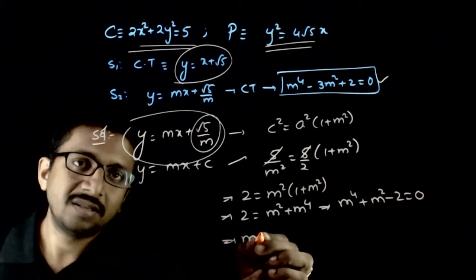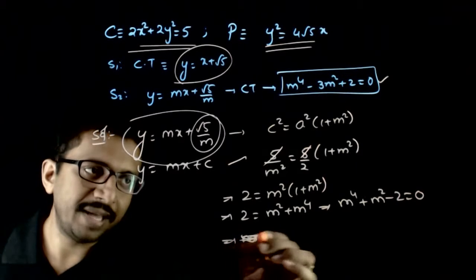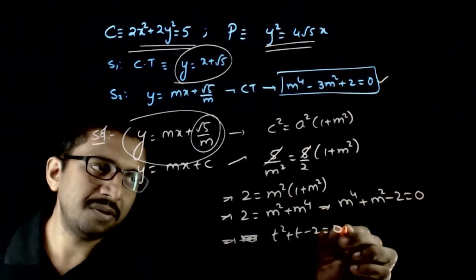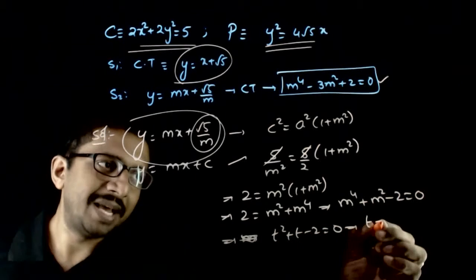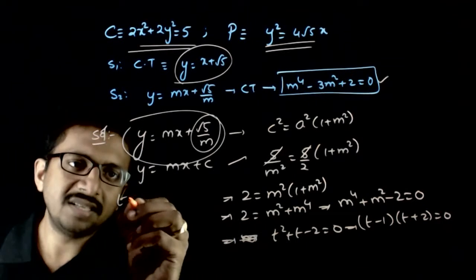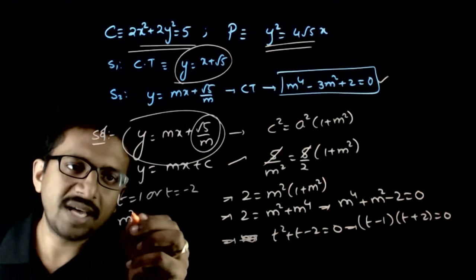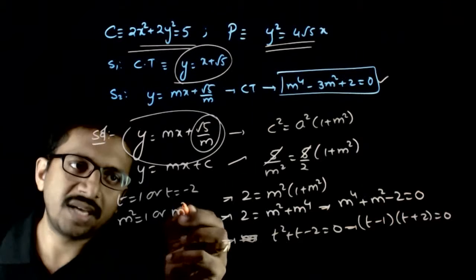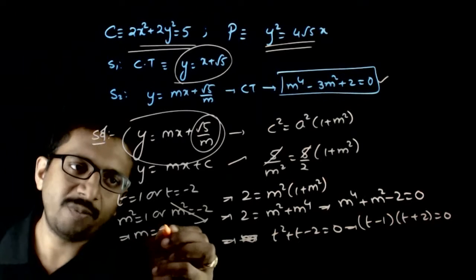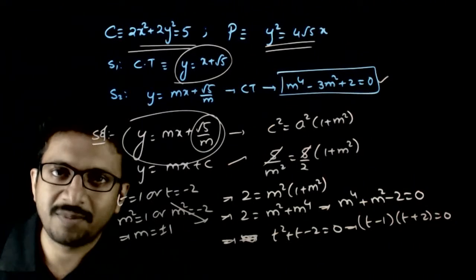This is a quadratic in m². Substituting t = m², we get t² + t − 2 = 0, which factors as (t − 1)(t + 2) = 0. So t = 1 or t = −2. Since m² = −2 is not valid, we have m² = 1, which gives m = ±1.